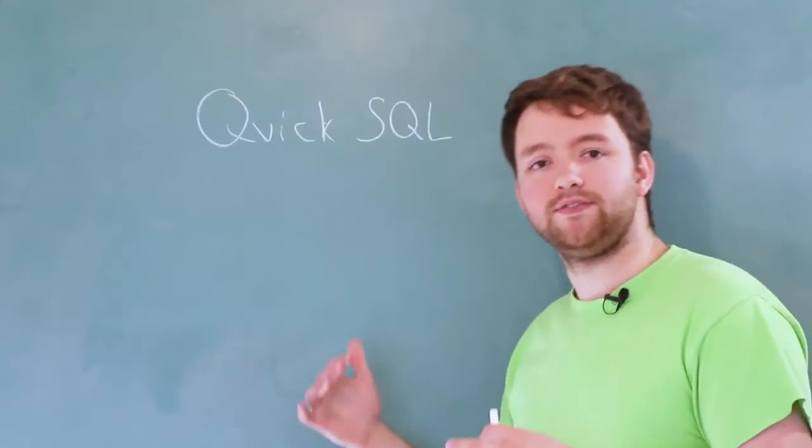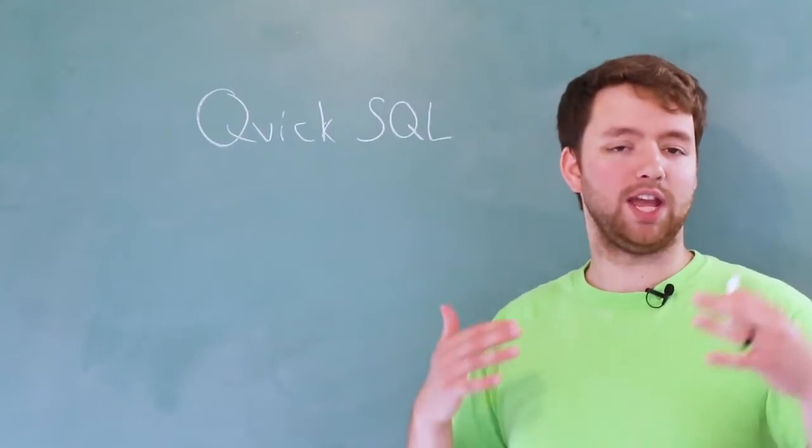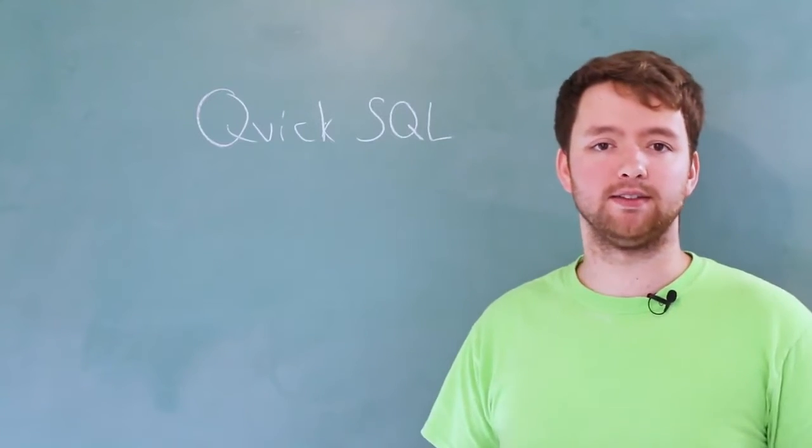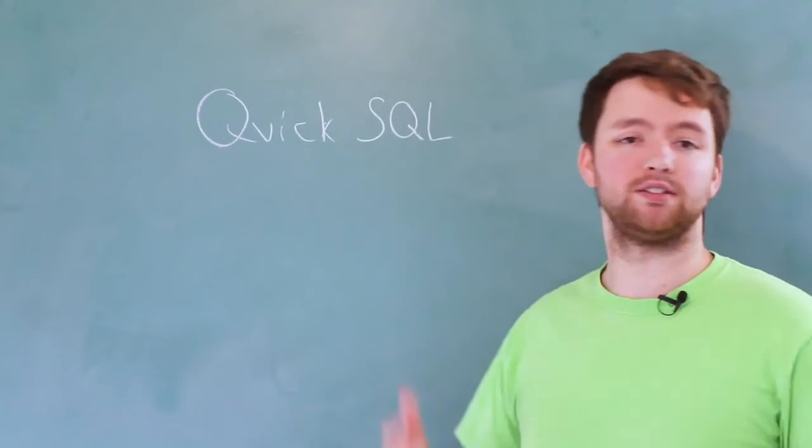Then what we're going to do is we're going to move into creating an application from a file. So you can take a spreadsheet, for example, and you can turn that into a web application. Then we're going to go into the database side of it a little bit and talk about something known as Quick SQL. This is a feature that allows us to quickly create the SQL to create tables inside of the database.